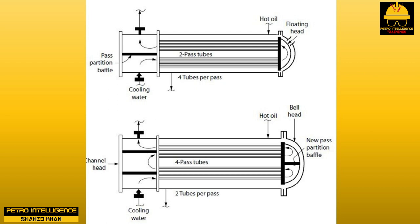The restricted water flow increased the water outlet temperature; the increased water temperature further reduced water flow — a vicious cycle. They changed back to the two-pass configuration. Compare this story to the lecture on shell-and-tube heat exchangers where two passes were increased.